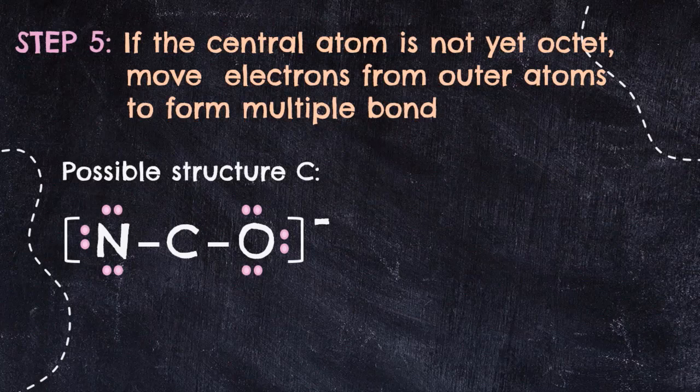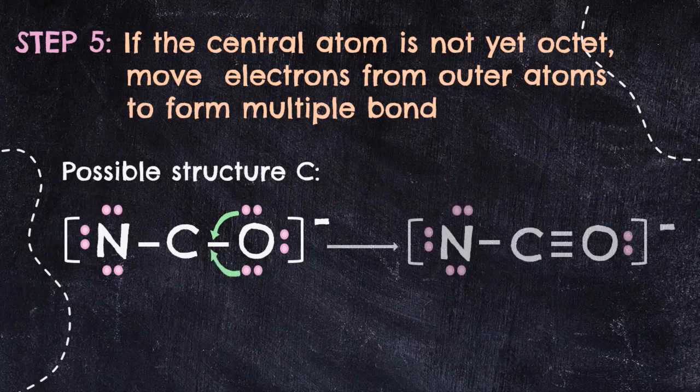For structure C, we take 4 electrons from oxygen only to form a triple bond between carbon and oxygen, with a single bond between carbon and nitrogen. Checking carbon: 2, 4, 6, 8 electrons surrounding this carbon atom — octet achieved.